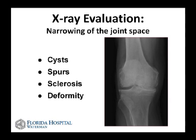We then proceed to obtain x-rays, which we do right in the office, and we review the x-rays together. This is an x-ray of a knee — you can see this patient has bone-on-bone arthritis on the inner side of the knee. When I look for changes on the x-ray, I'm looking for loss of cartilage, cysts or spurs formed in the bone because of the arthritis, and whether there is a deformity noted on the x-ray and during the physical examination.